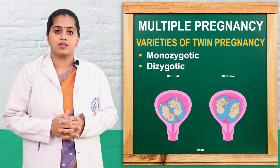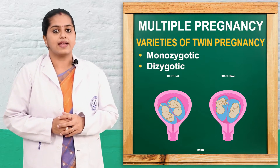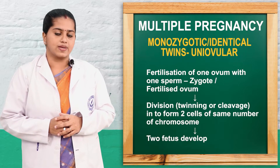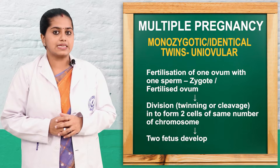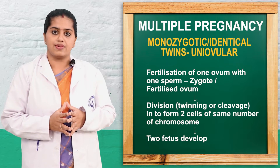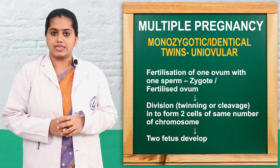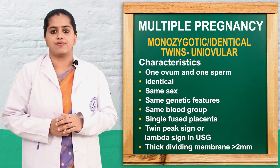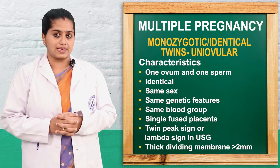Next we will discuss the varieties of multiple pregnancy. Two types are there: monozygotic twins and dizygotic twins. Monozygotic twins are otherwise known as identical or uniovular twins. Here, fertilization of one ovum with one sperm occurs, and a single fertilized ovum or zygote is formed. This zygote undergoes twinning or cleavage and equal number of chromosomal cells are formed, later developing into two fetuses. These fetuses have the same characteristics, same sex — male-male or female-female — and same blood group and same DNA.